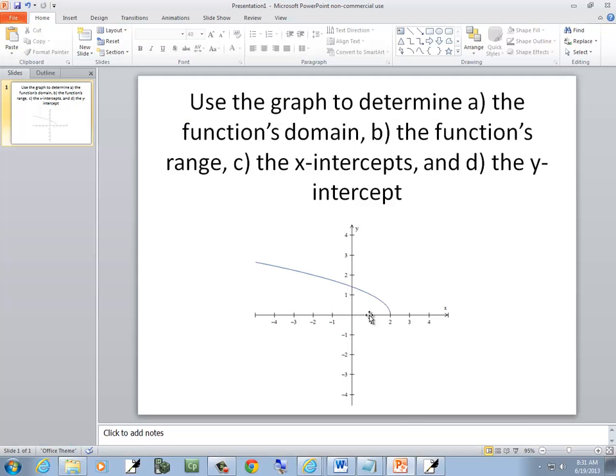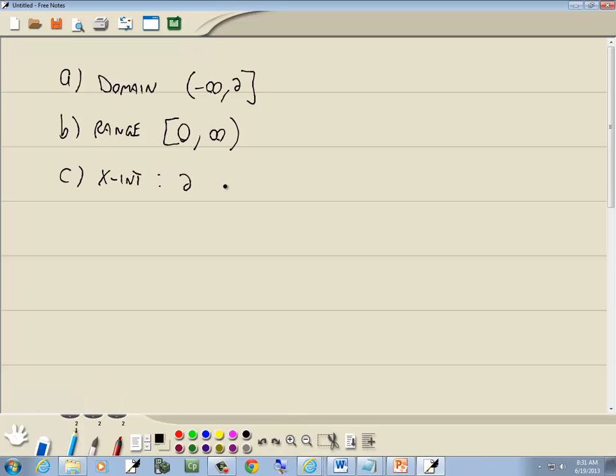Now our x-intercept, looks like it touches at 2. So it would be 2, or if you want to write in point form, it would be 2, 0.